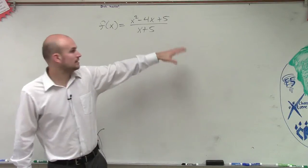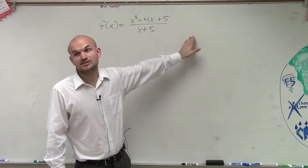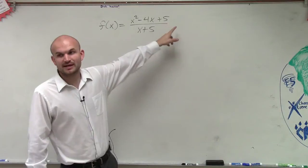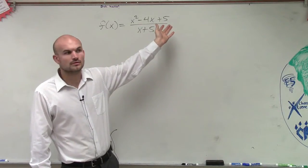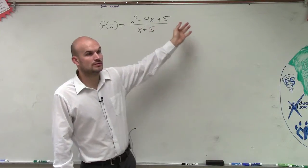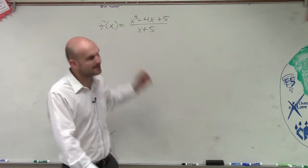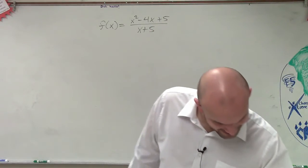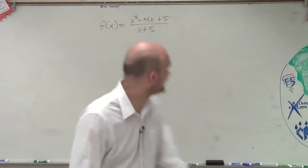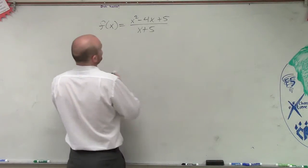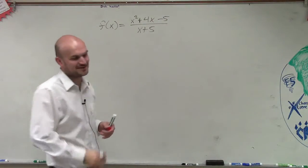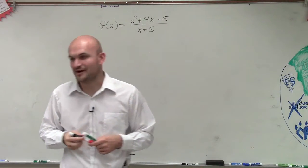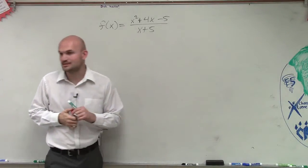Is x plus 5 factorable? No. Is the numerator factorable? Well, let's see. What two numbers multiply to give you 5 but add to give you negative 4? Did I write it wrong again? I did. It's minus 5. Yes, it's plus 5 and minus. Of course you said no, it's not factorable. Plus 4 and minus 5. Is that factorable? Yes, this is factorable.